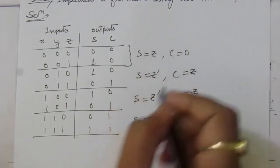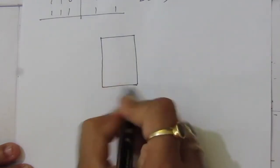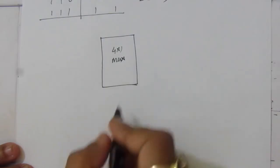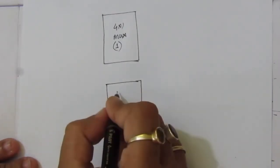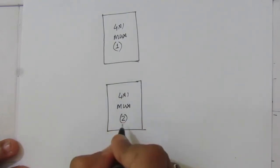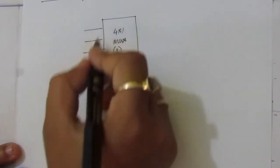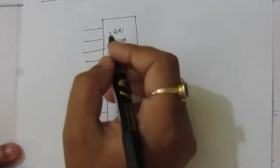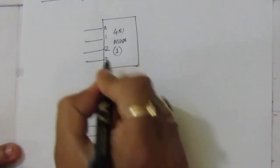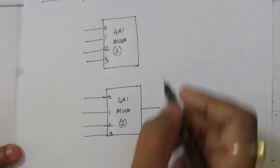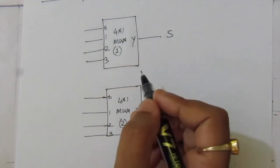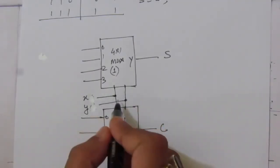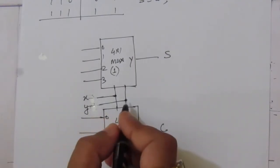So one 4-to-1 multiplexer will be used for the sum part and another multiplexer for the carry part. We have two multiplexers: multiplexer number 1 and multiplexer number 2. For each multiplexer we will have 4 inputs: 0, 1, 2, and 3, and one output. From multiplexer 1 we will find the sum, and from multiplexer 2 we will find the carry. These outputs are denoted by Y.